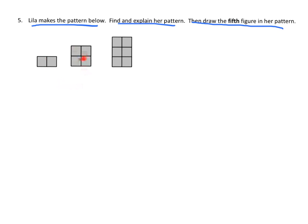When going from figure 1 to figure 2, the width stays the same but it got taller. The same is true from figure 2 to figure 3 — width stays the same, it gets taller. So I can assume the next shape will also keep the same width and get taller. The first figure is 1 by 2, the second is 2 by 2, the third is 3 by 2, so the fourth is going to be 4 by 2.